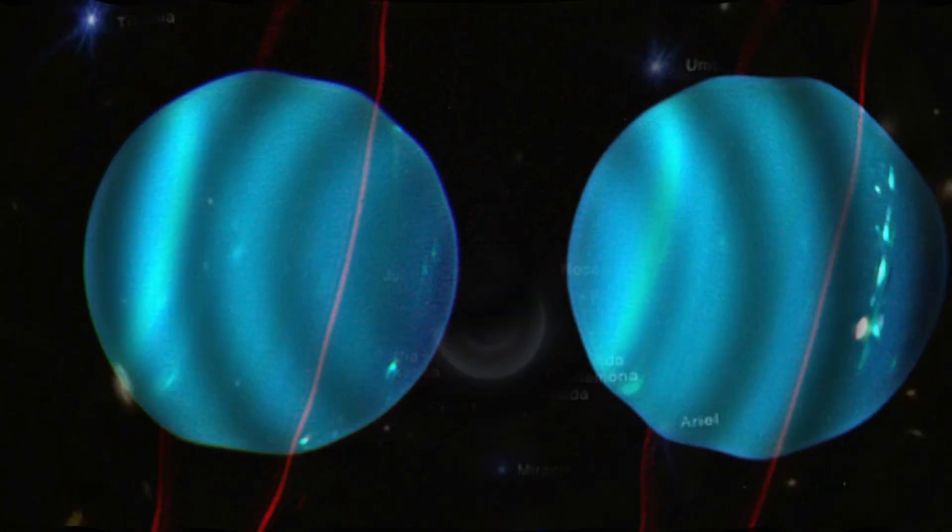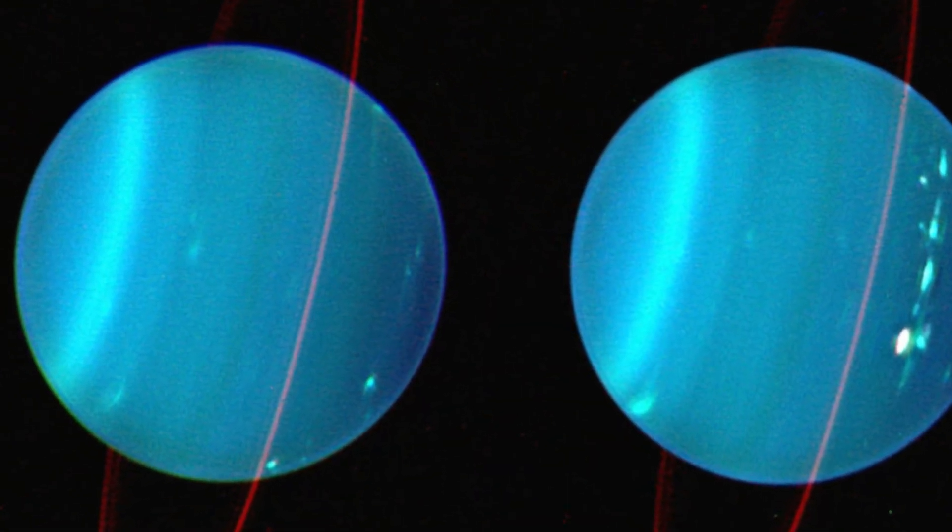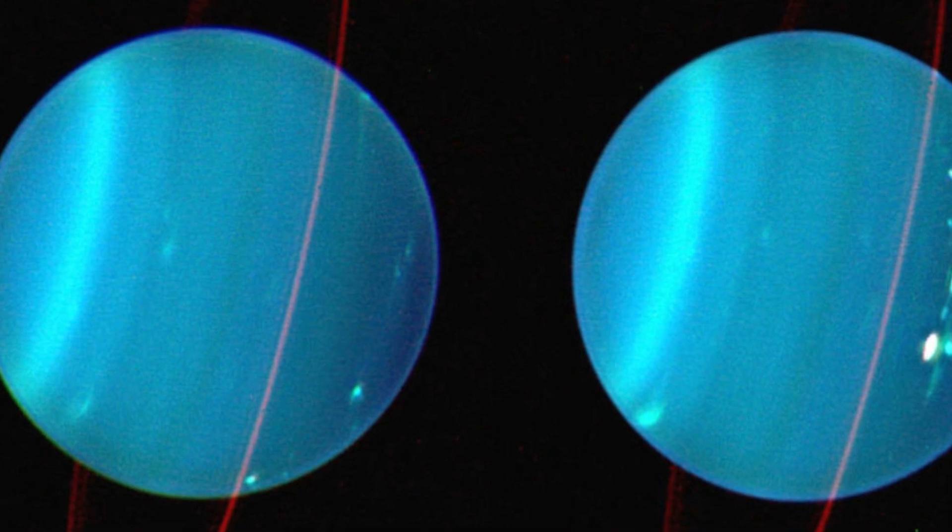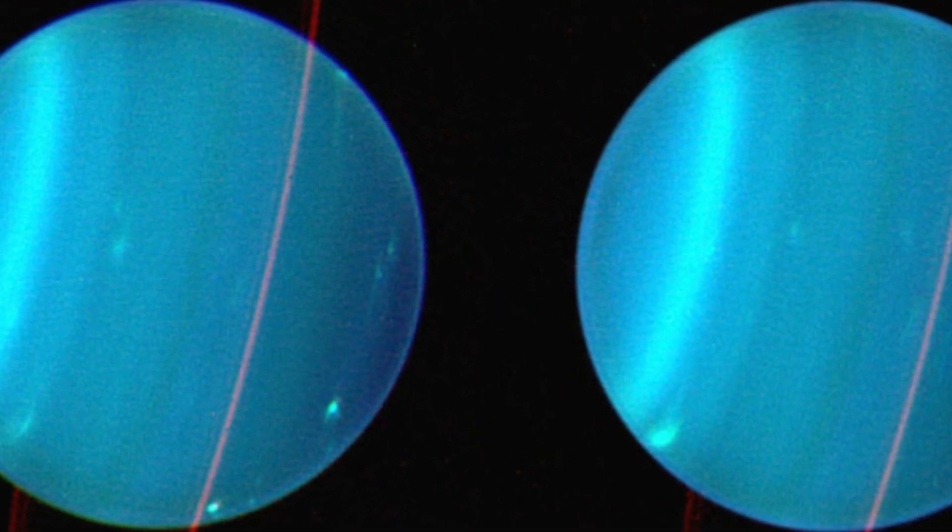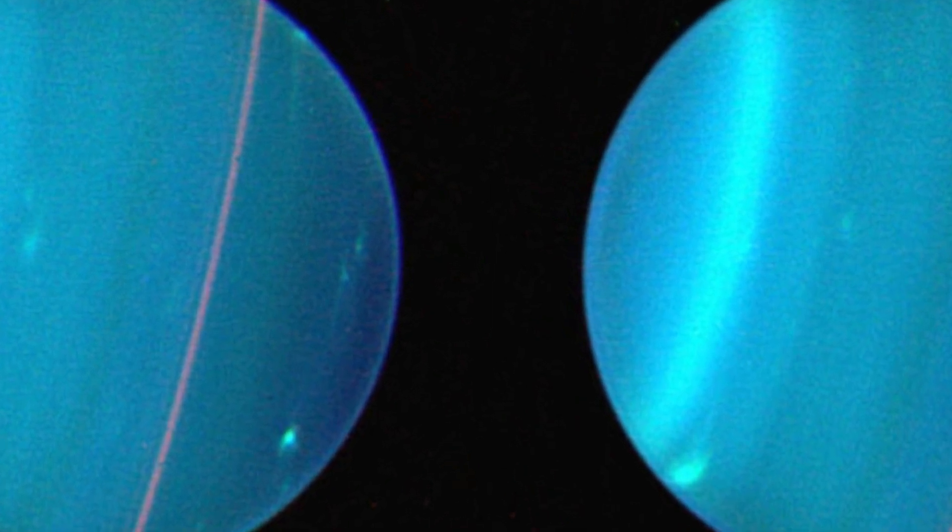A standout feature in the imagery is Uranus' seasonal north polar cloud cap. Notable details, such as the bright white inner cap and the dark lane at the bottom of the polar cap towards the lower latitudes, are now more discernible compared to Webb's earlier images this year.